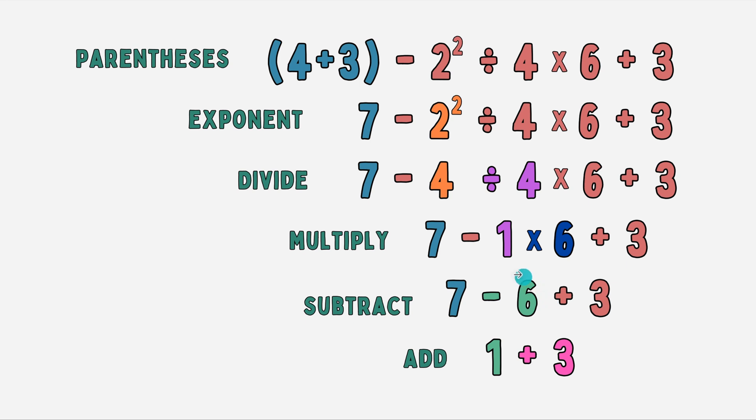Once I subtracted 7 minus 6, I got 1, and I finally was able to add my 3 to get 4.